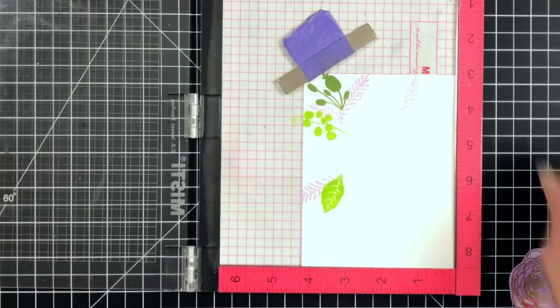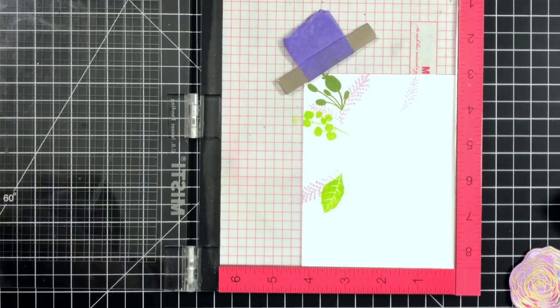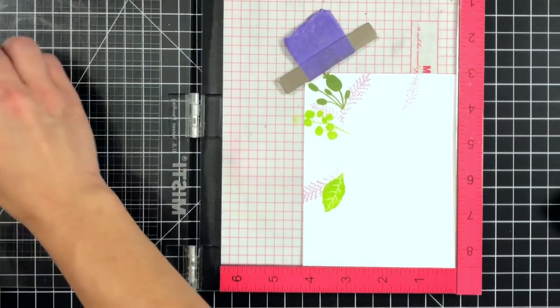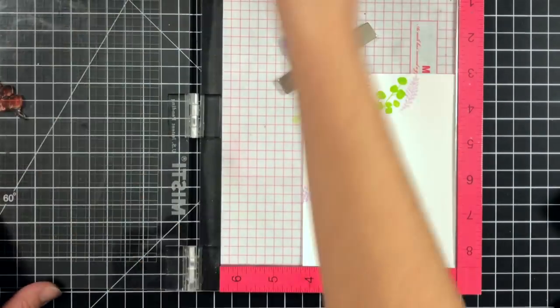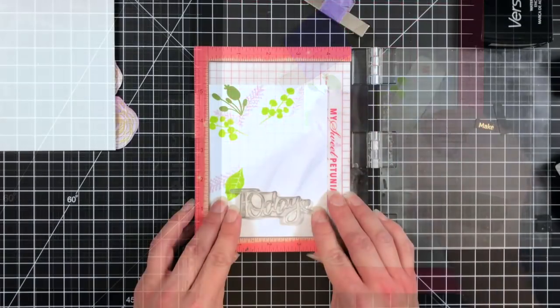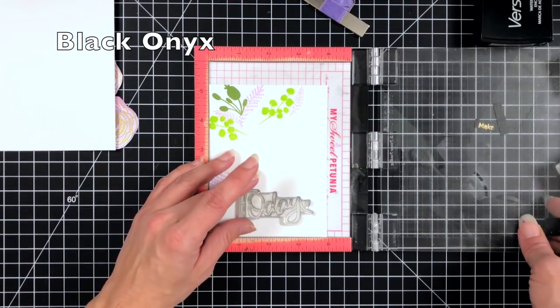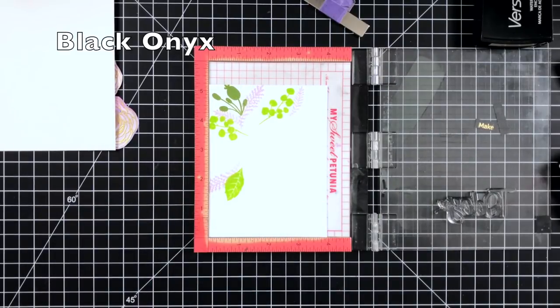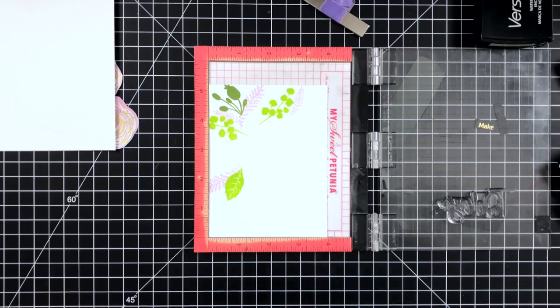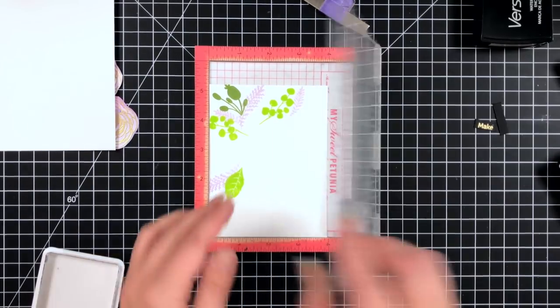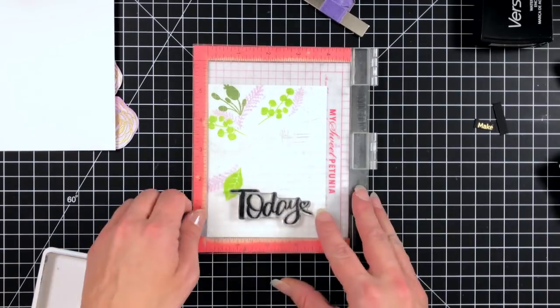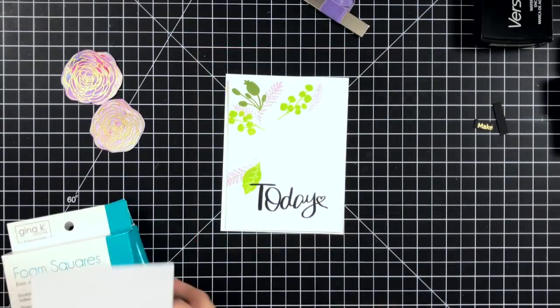This stamp set has a lot of different things you can do with it. There's going to be more inspiration on the Gina K Designs blog. I'll have all the supplies listed for my card as well. You could just use an acrylic block to do all of your stamping. I just find it easier to use the MISTI so I can double stamp something to darken up that color. Next I'm taking the word 'today' which is also on the stamp set and I'm going to stamp this towards the bottom. I'm using the Gina K Designs black onyx ink and I do stamp it twice to make sure I have a really nice dark impression.